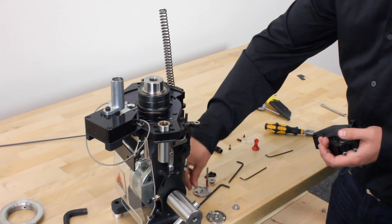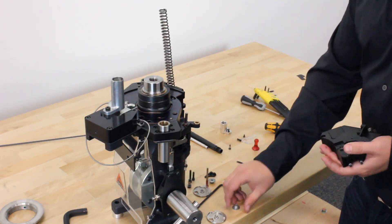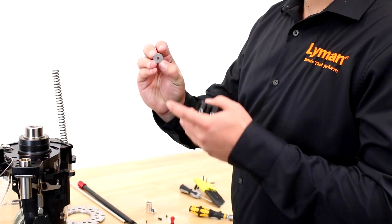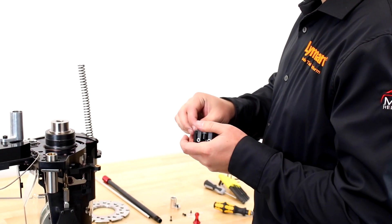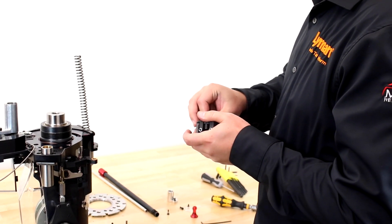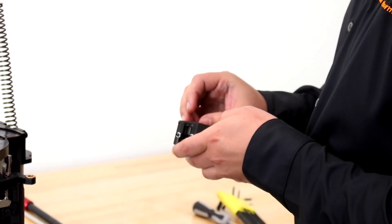So now what you're going to want to do is take your small primer components and put them aside so you don't lose them. Next, we're going to take our large primer bushing—it's engraved large because we're swapping from small to large in this situation—and screw it into the housing.